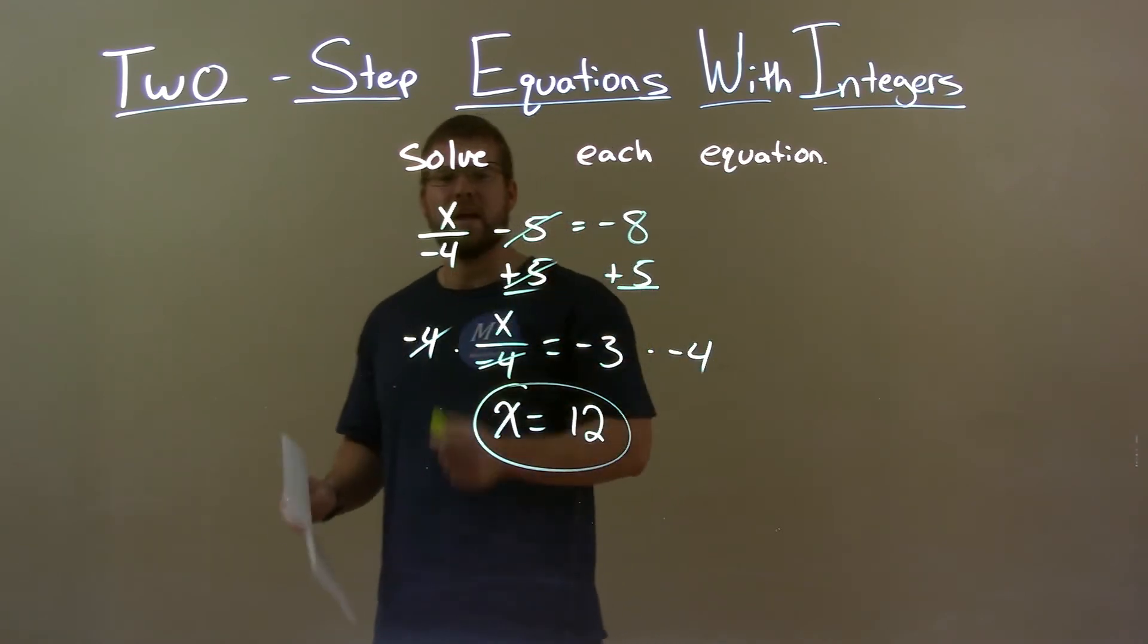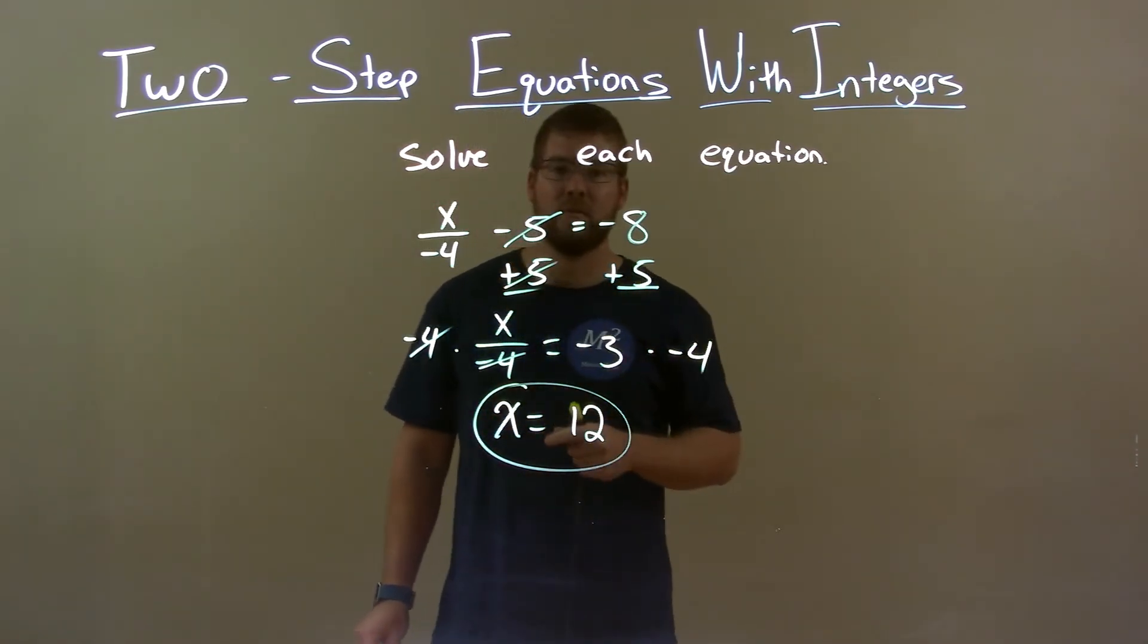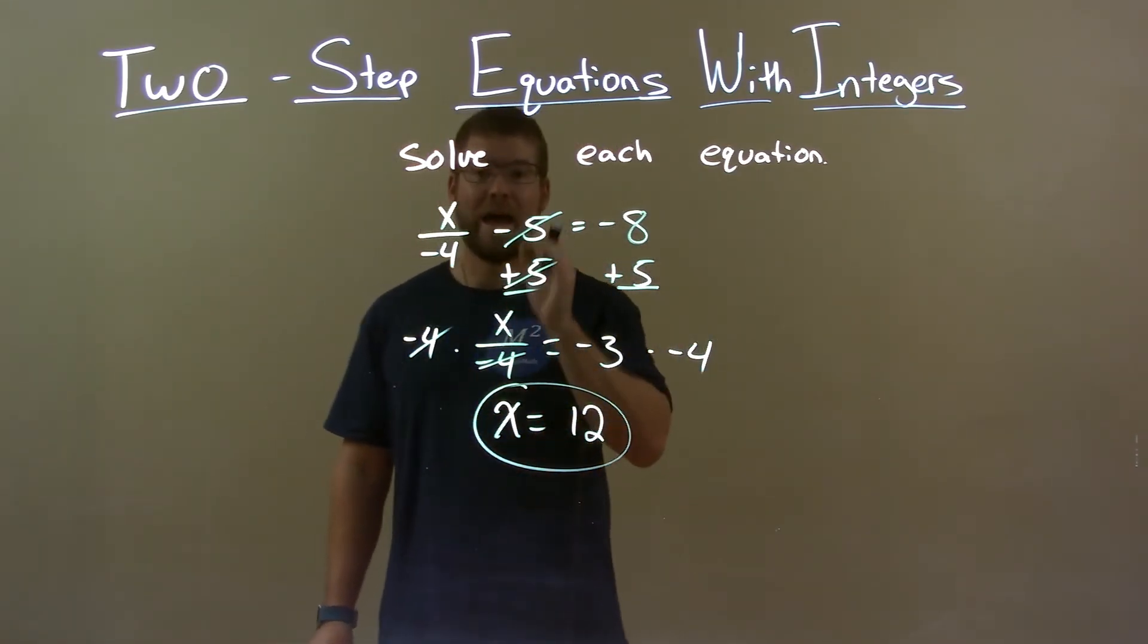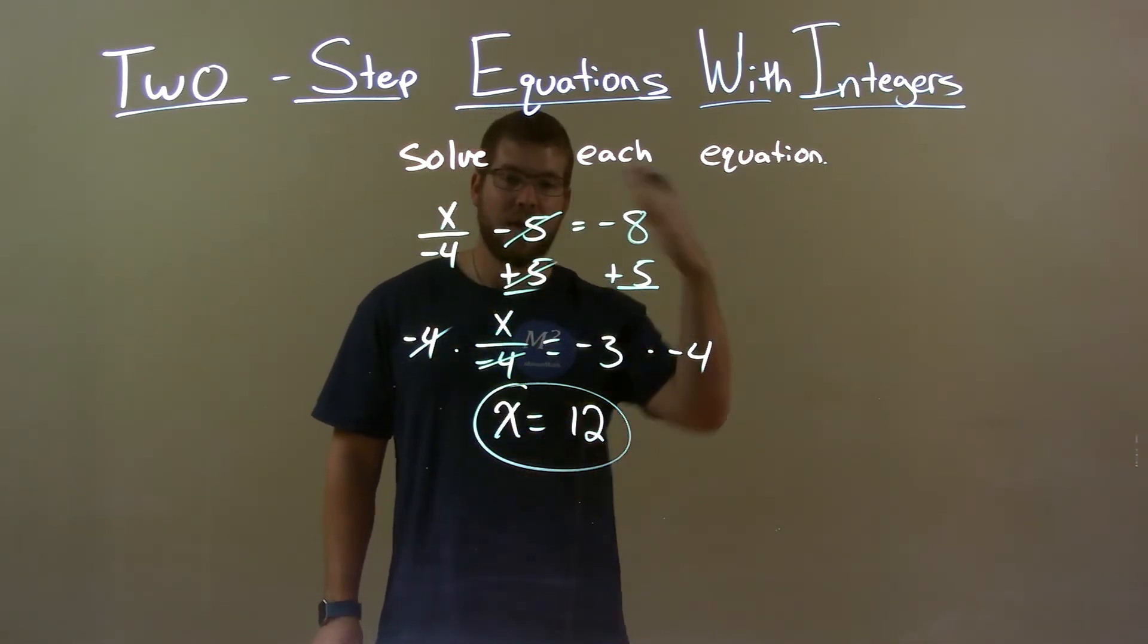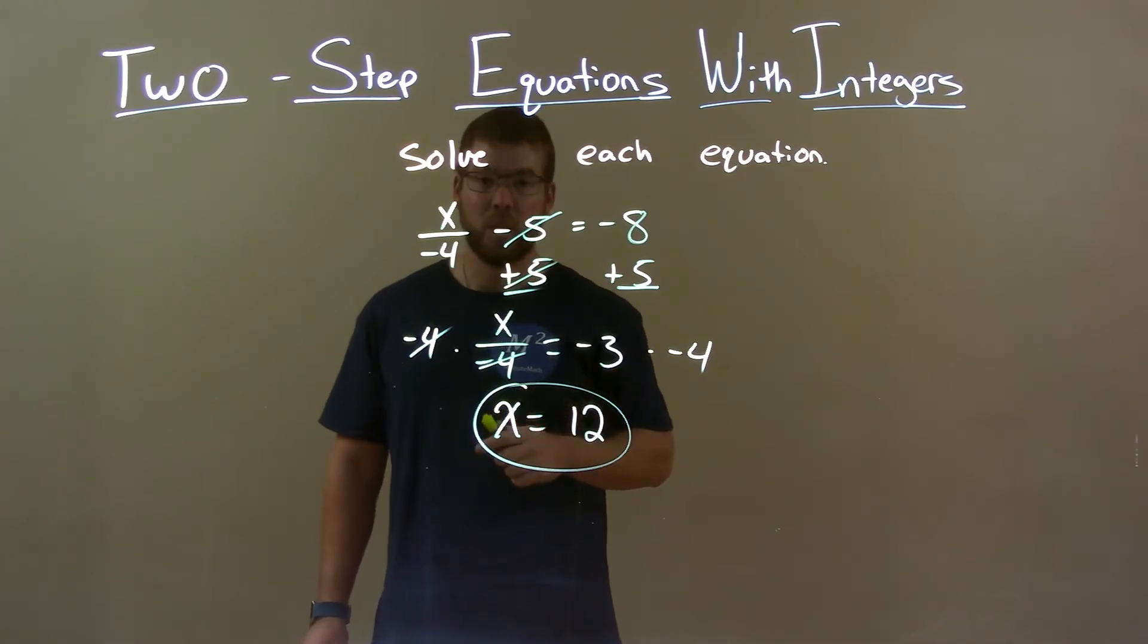Quick recap. We're given x over negative 4 minus 5 equals negative 8, and we want to solve for x. Add 5 to both sides and then multiply negative 4 to both sides. That gives me a final answer: x equals positive 12.